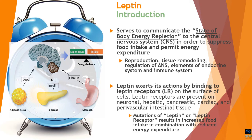Leptin exerts its action by binding to specific leptin receptors, which are present on the surface of cells. When leptin binds, the cell responds after formation of the leptin-receptor complex. These receptors are present across systems of the human body — in neural, hepatic, pancreatic, cardiac, perivascular, and intestinal tissues — but the most varied and diverse function is via the hypothalamic satiety control system.